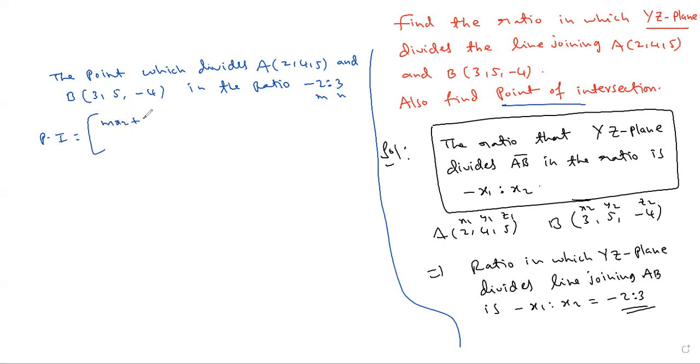Section form is Mx2 plus Nx1 by M plus N. Very important question, regular exam. My2 plus Ny1 by M plus N, Mz2 plus Nz1 by M plus N.